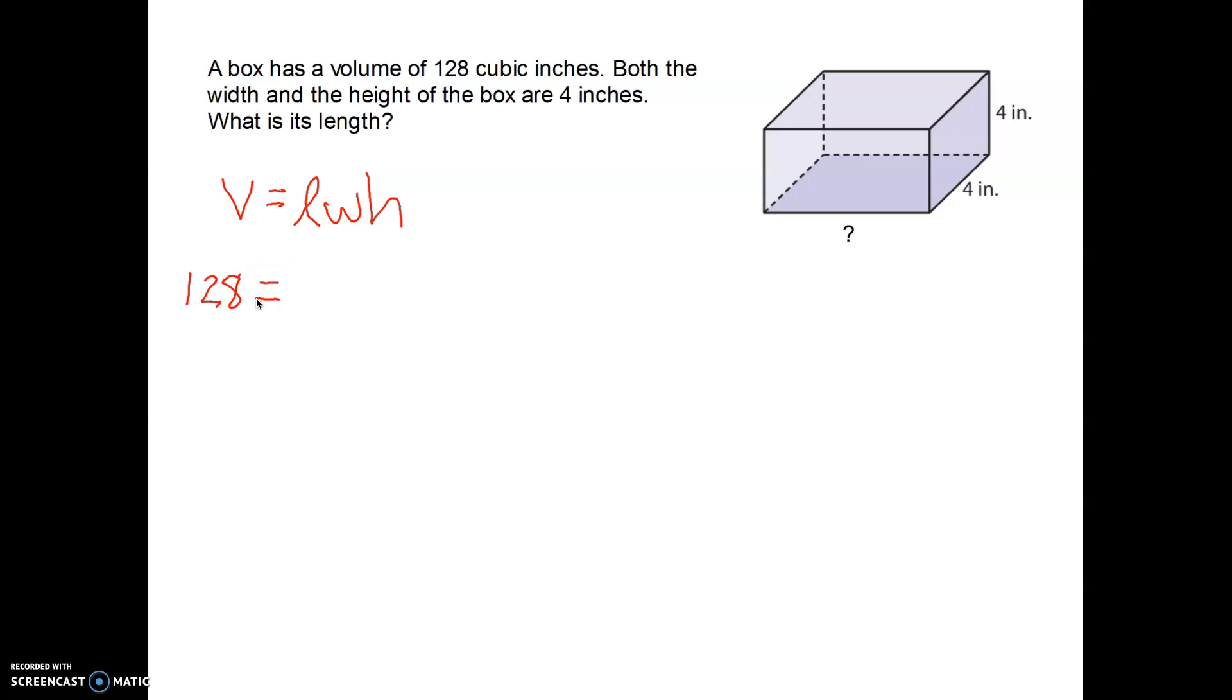The next thing we got is length. We don't know the length because that's what we're trying to figure out. So I'm just going to keep the L there as my variable. Next thing is the width, and we know that the width is 4 inches. So I'm going to multiply the length by 4. The last thing is the height, which I know is also 4 inches. So I know that 128 equals the length times 4 times 4.